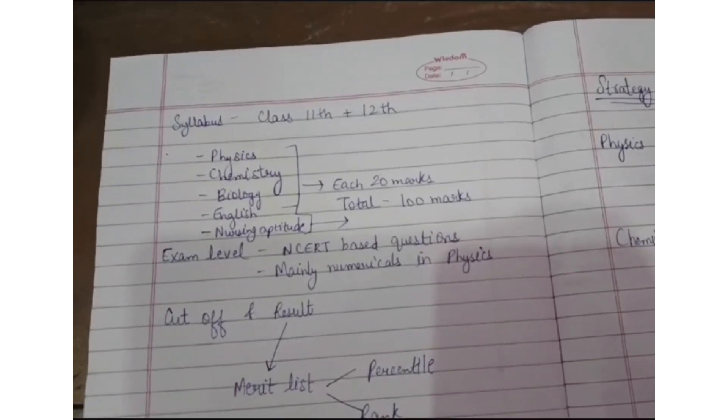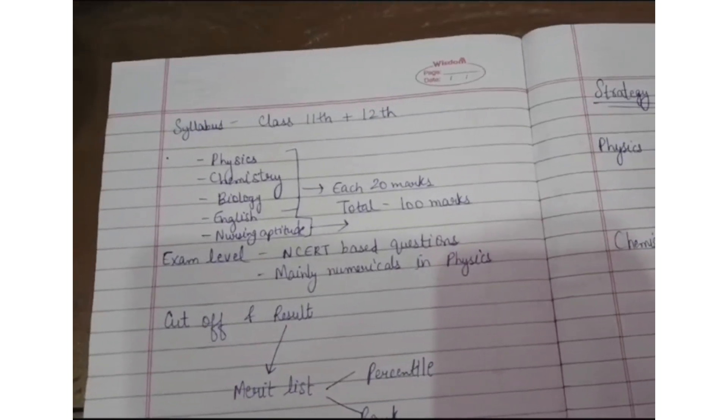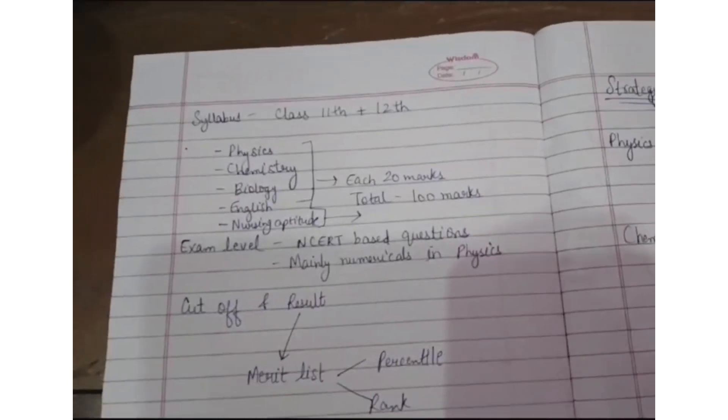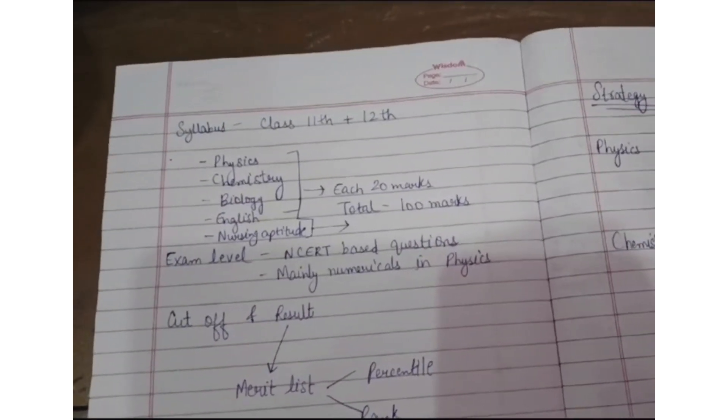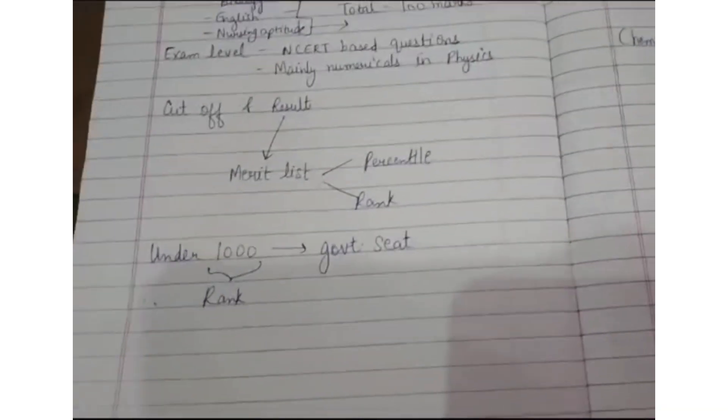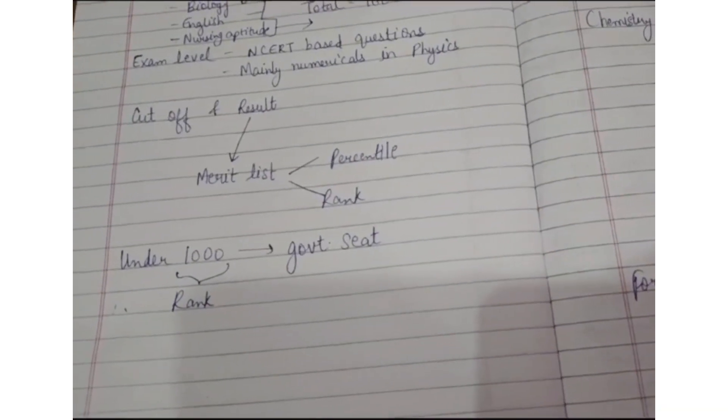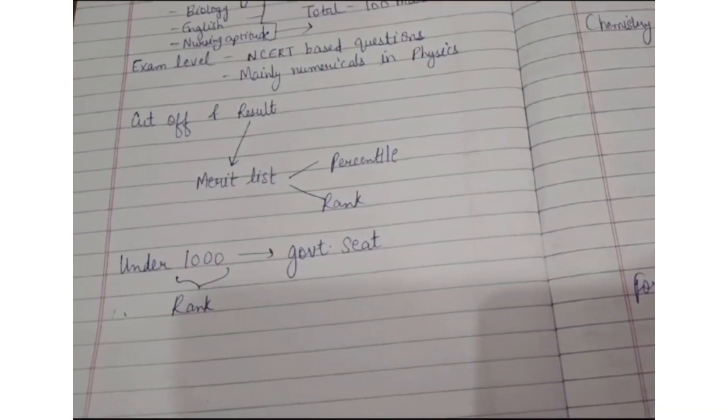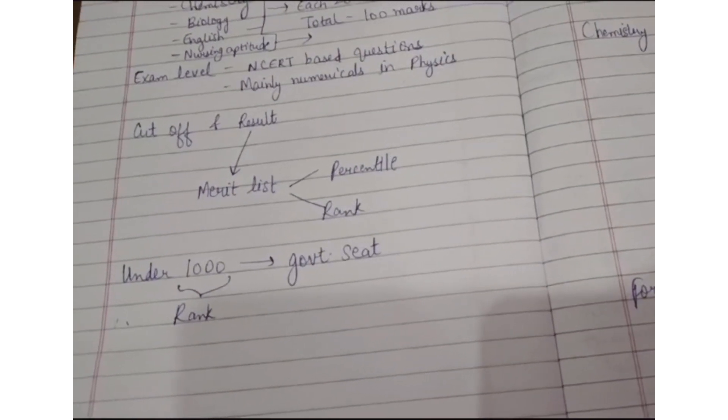The exam level is mainly NCERT based. Questions are asked and in Physics mainly numericals are asked, so everyone should focus mainly on numericals. When we talk about cutoff and result, the result is published in the form of a merit list which consists of your percentile and rank.